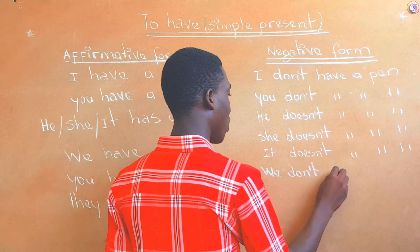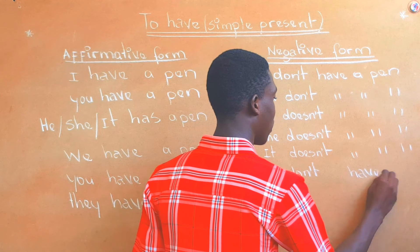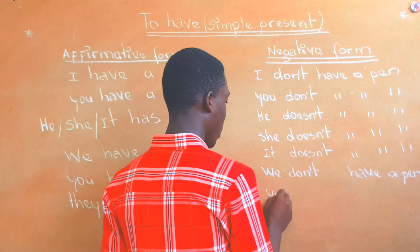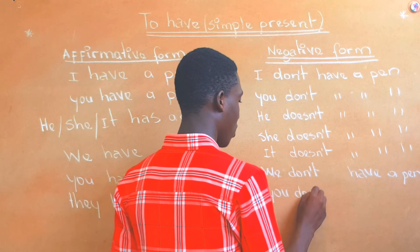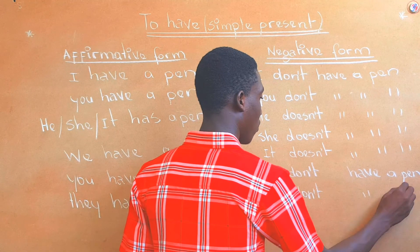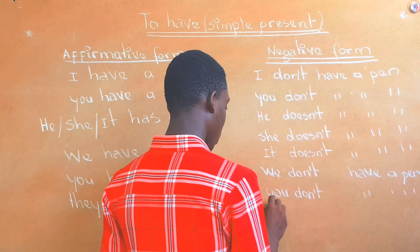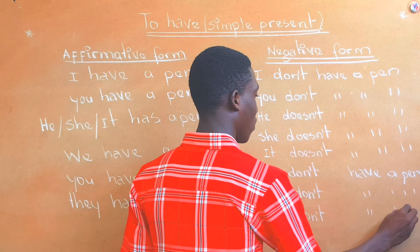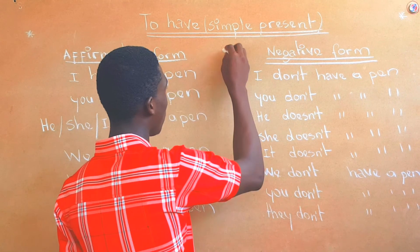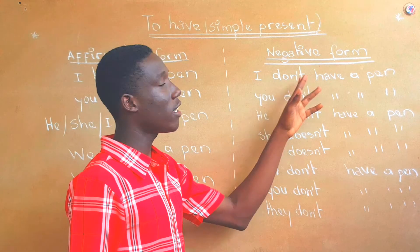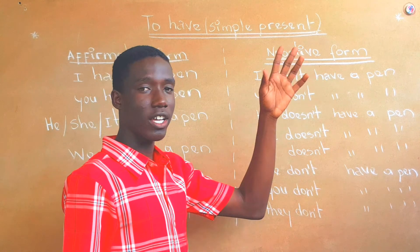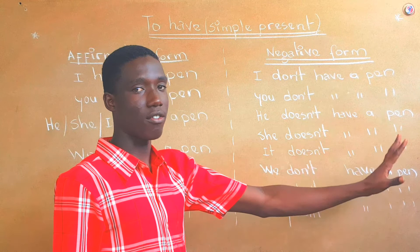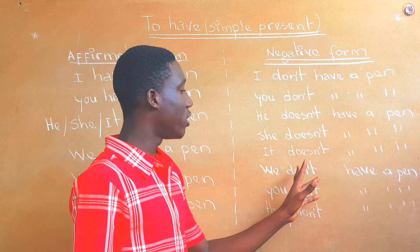We don't have a pen. You don't have a pen. They don't have a pen. This is the negative form: I don't have a pen, you don't have a pen, he doesn't have a pen, she doesn't have a pen, it doesn't have a pen, we don't have a pen, you don't have a pen, and they don't have a pen.